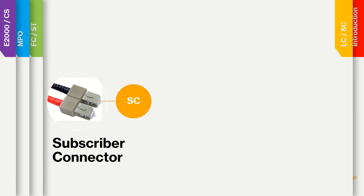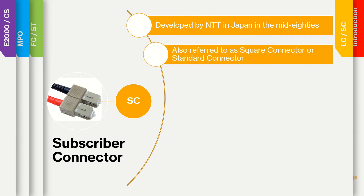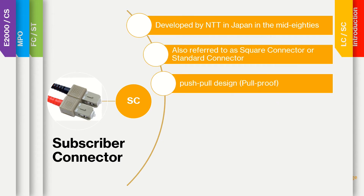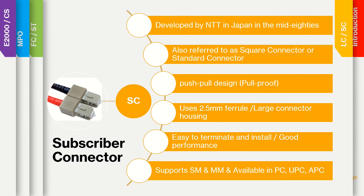The SC connector dominated the market for over a decade before the LC. It was introduced by NTT from Japan in the mid-1980s, and is also referred to as a square connector or standard connector. It is equipped with a push-pull plastic housing design that overtook the previous ST and FC connectors in practicality. It utilizes a 2.5 mm ferrule in its large housing. It is an easy-to-terminate connector with good performance. SC connectors are available in single mode and multi-mode, in UPC, APC, and PC style.